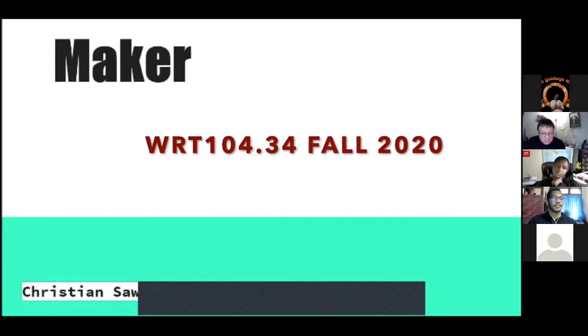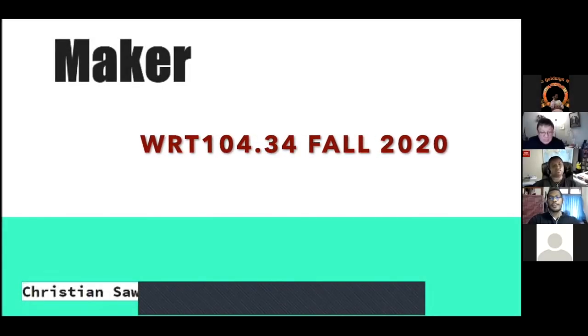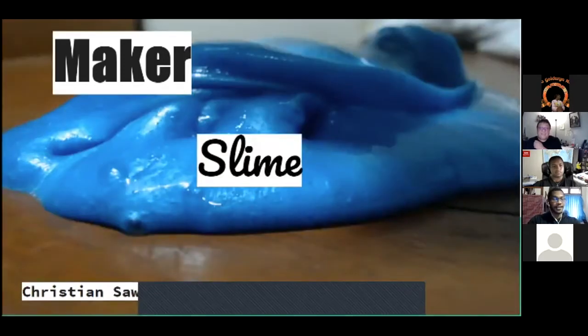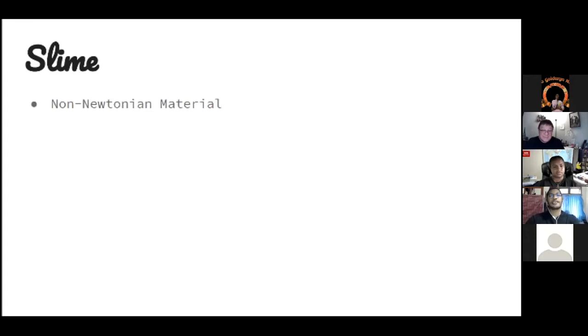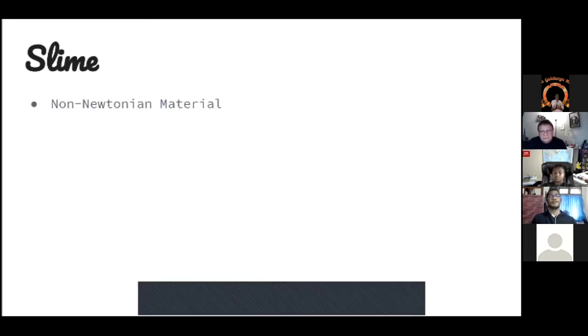For my first badge I took the maker badge and decided to make slime. First of all, we need to know what is slime. Slime is actually a non-Newtonian material. A non-Newtonian material is a material that prefers Newton's laws. If you give a high pressure to this material, it'll fight the pressure and it works.